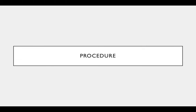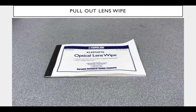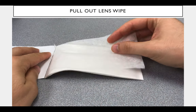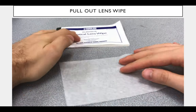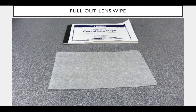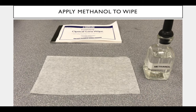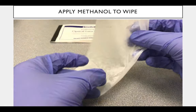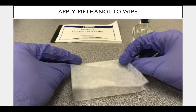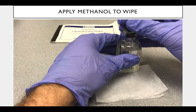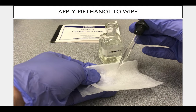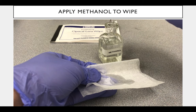Alright, let's use this thing. First, pull out a lens wipe — we're going to clean some stuff. On that lens wipe, you're going to drip some methanol. Methanol is a disinfectant — going to kill any microbes living on our microscope before we use it.